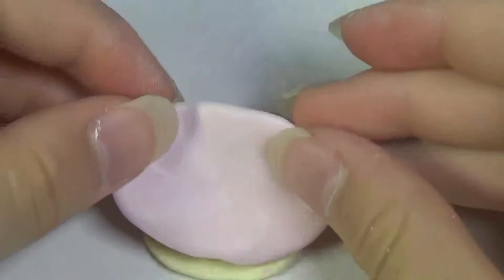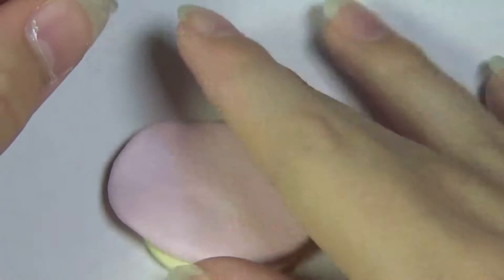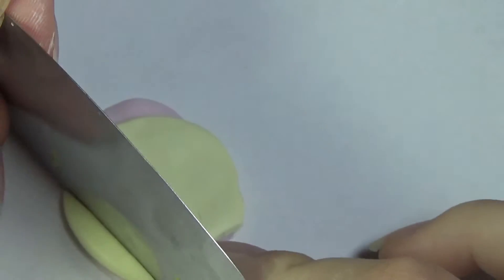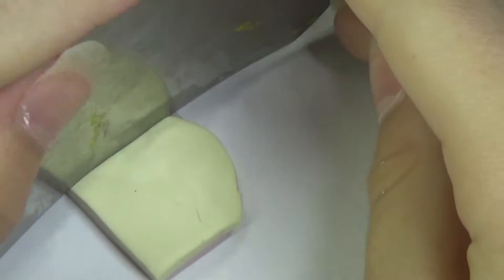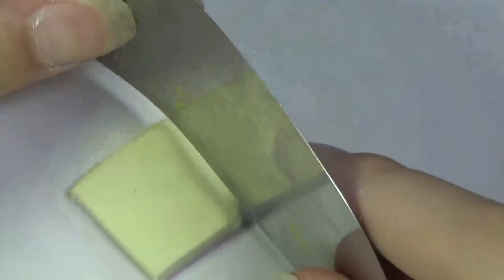Go ahead and take the light yellow and light pink and flatten it out and then place them on top of each other and cut into a square. Now then adjust it to the size that you want.